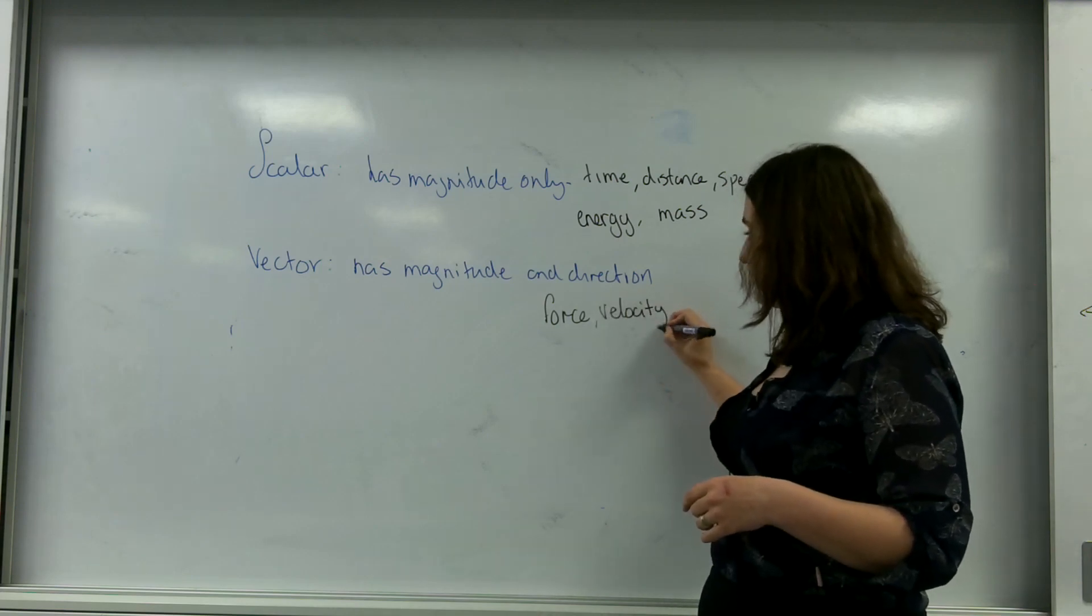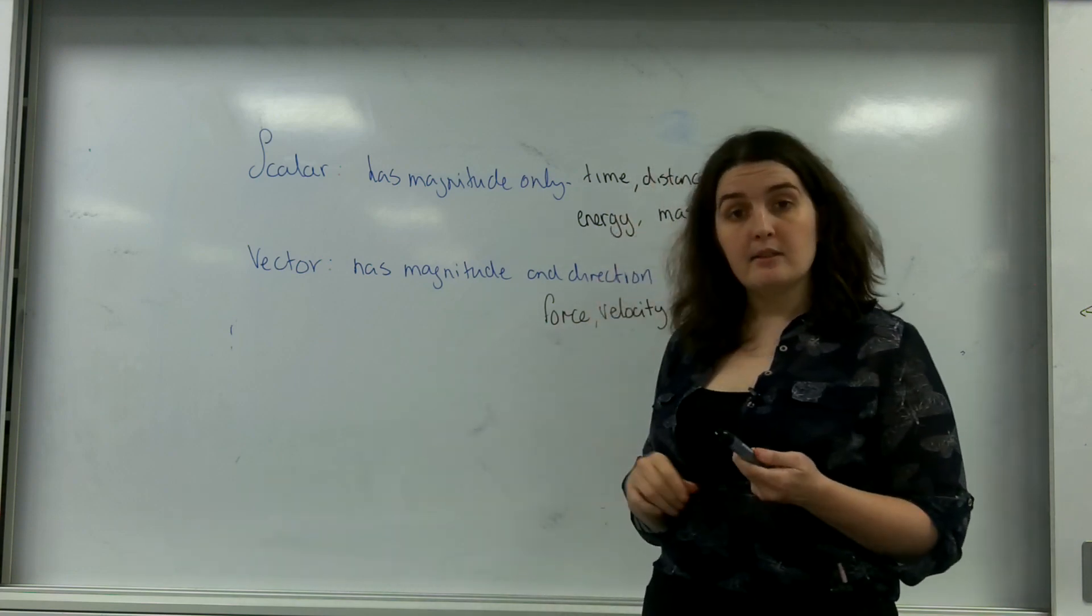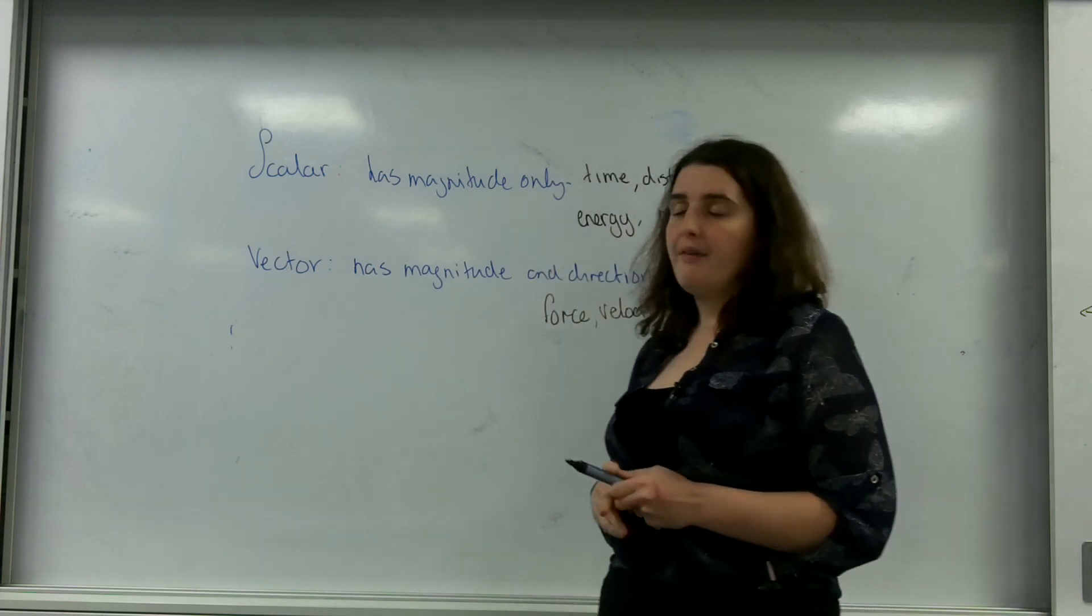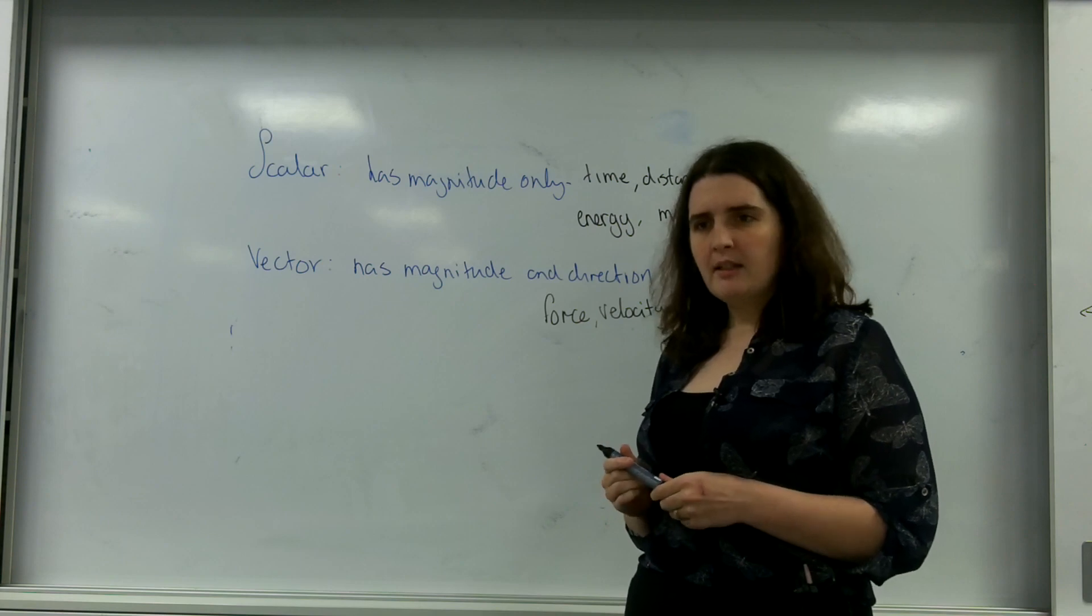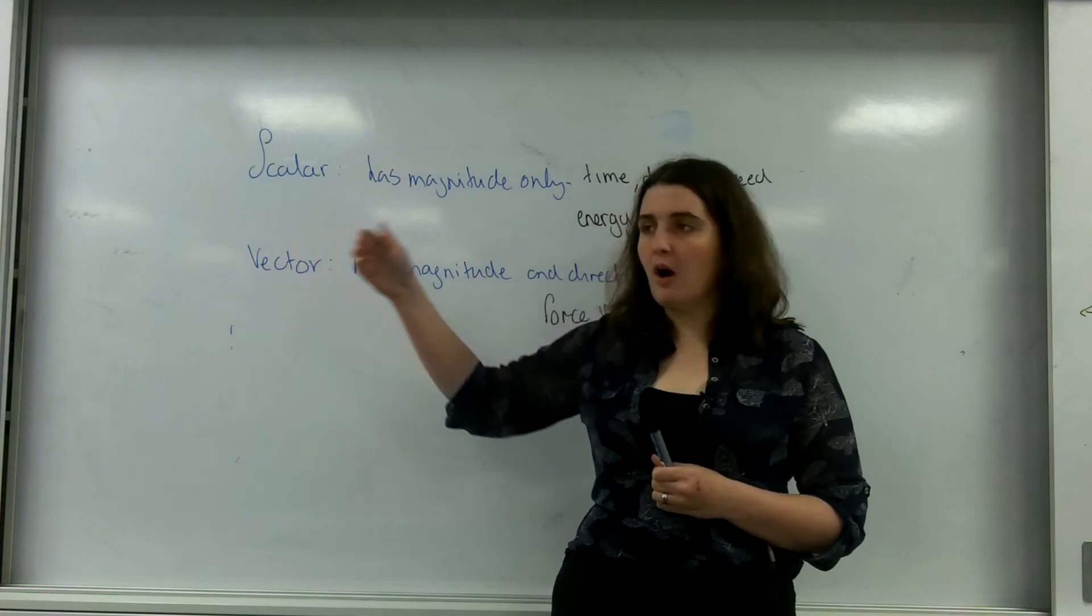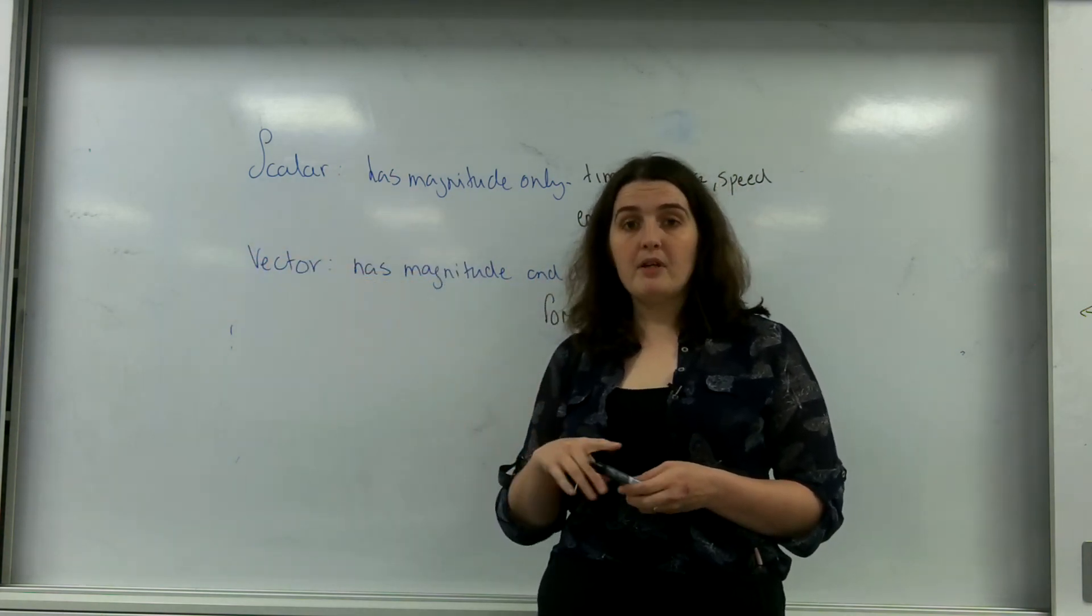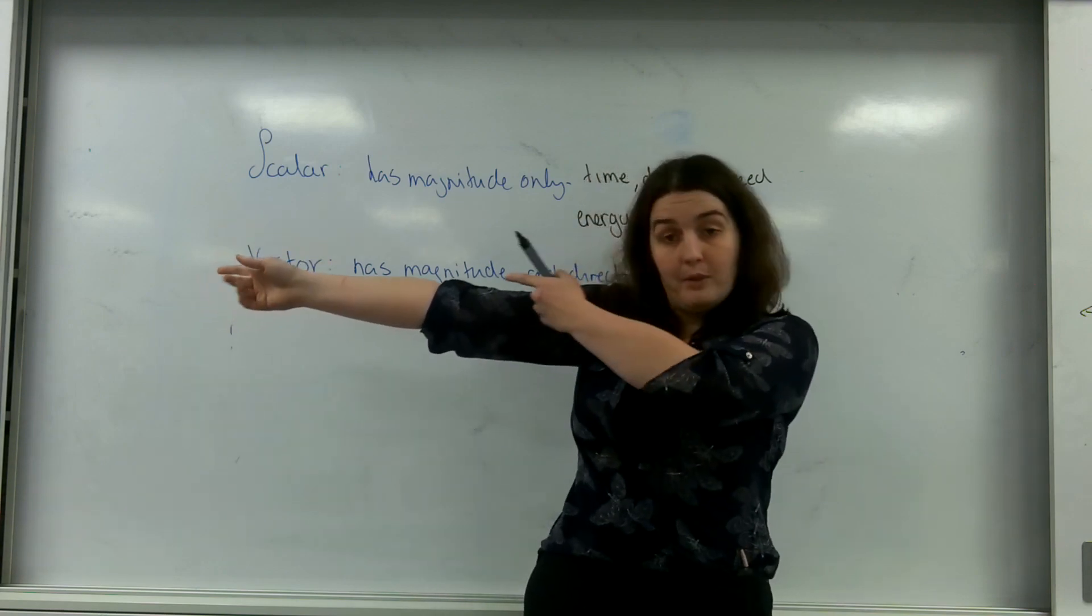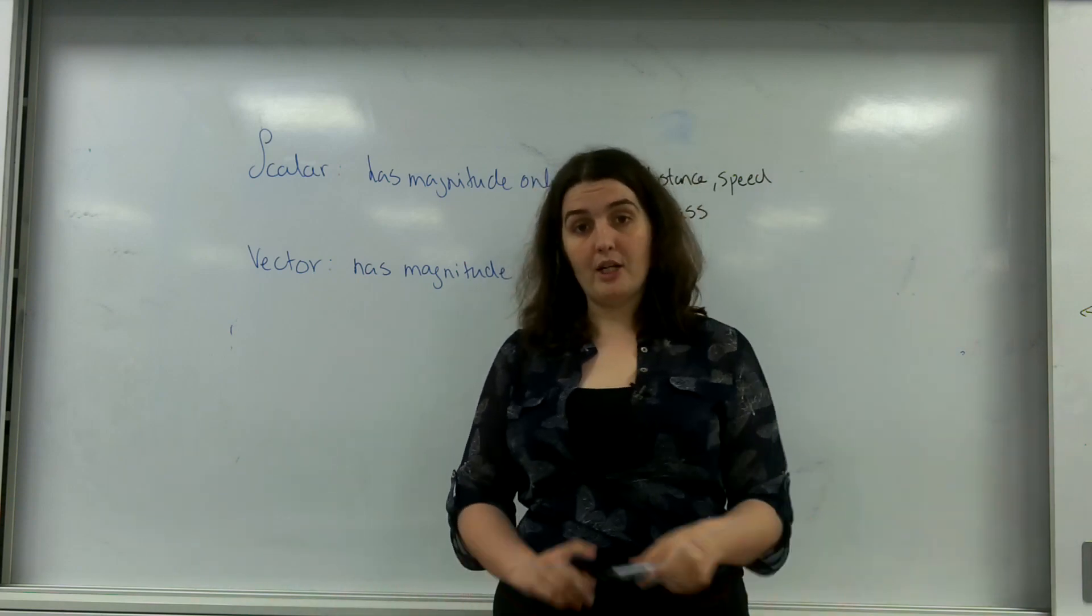Velocity is also a vector, and it's slightly different from speed. Speed is saying like 40 miles per hour. Velocity has a direction. If I say I'm going 2 metres per second, and this way was positive, I am moving 2 metres per second this way. But if I said I was going minus 2 metres per second, and that way was still positive, it means I'm moving 2 metres per second in the other direction.